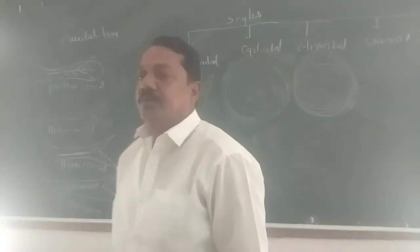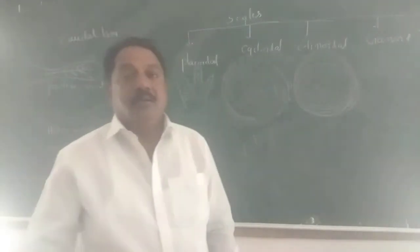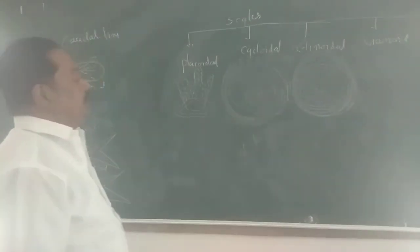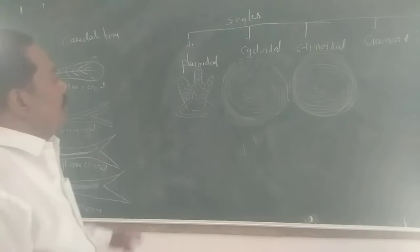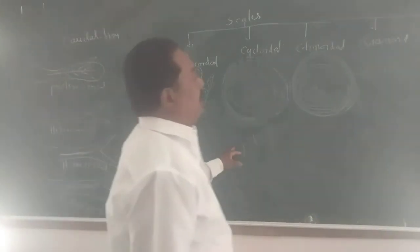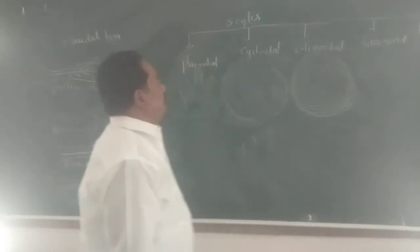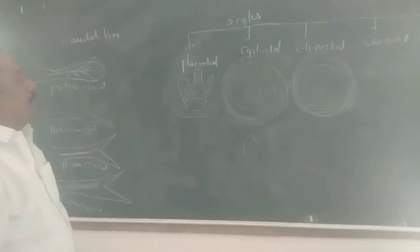Scales are classified into five main categories on the basis of structure and origin: placoid scale, cycloid scale, ctenoid scale, ganoid scale, and cosmoid scale. Out of these, first is the placoid scale.